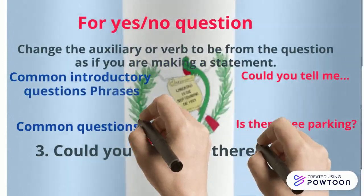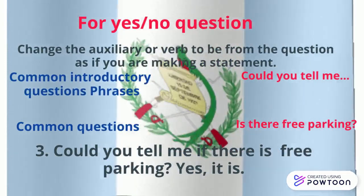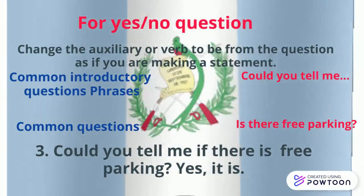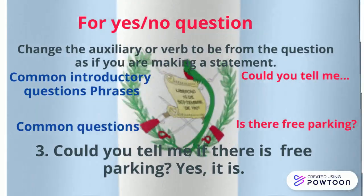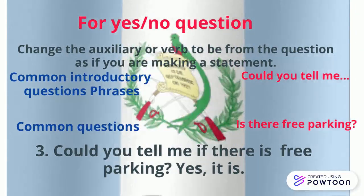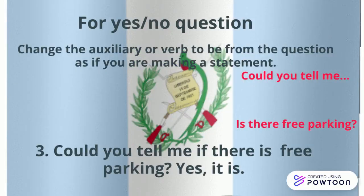For embedded questions with a yes or no answer, we change the auxiliary or verb form as if making a statement, and we add 'if.' For example, using 'could you tell me' and the question 'is there free parking?' — the embedded question becomes: 'could you tell me if there is free parking?' The answer is yes.